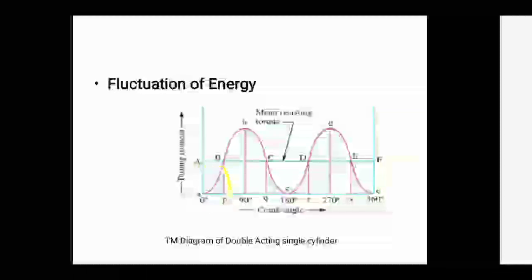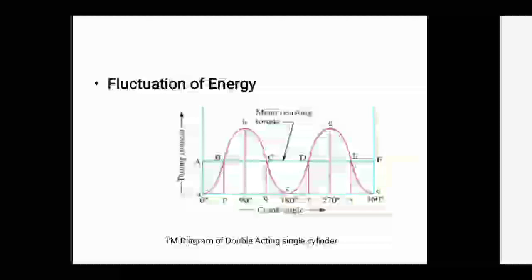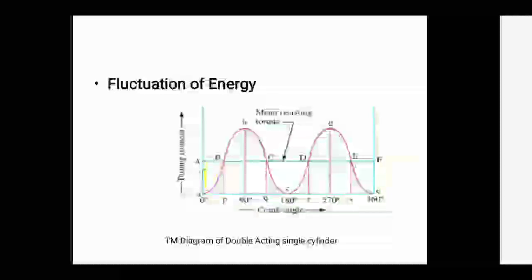When the crank moves from P to Q, the required energy is PBCQ, but we have surplus energy BBC available. This extra energy is supplied to the flywheel, and the flywheel stores it — meaning the flywheel speed increases. Where we are extracting energy from the flywheel, the speed of the flywheel decreases.